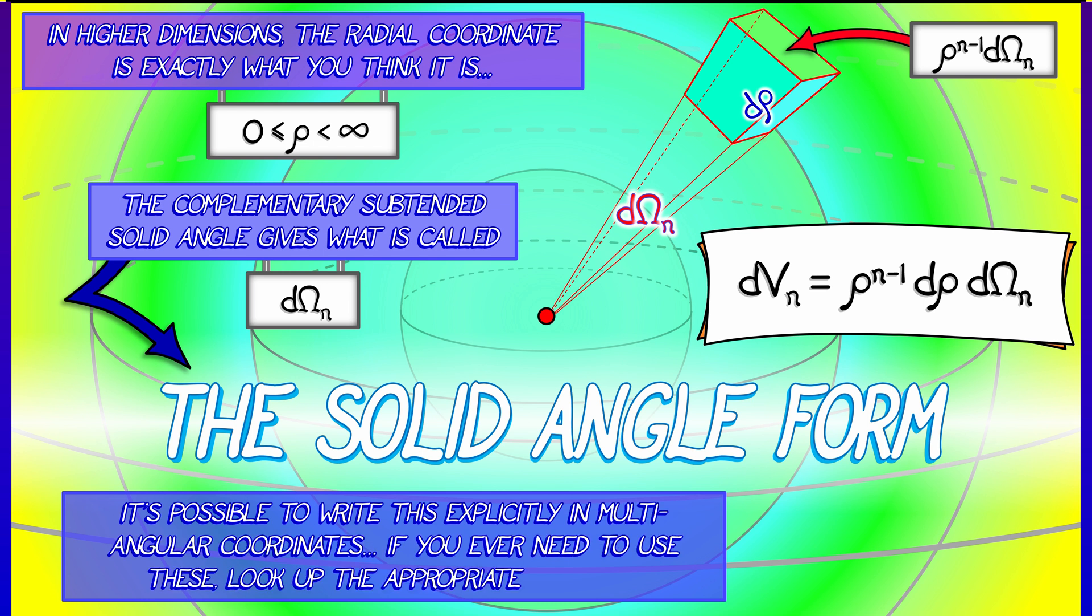Now this d omega n is a little weird, but you can write it out in terms of angles. How many angles? Well, n minus one of them.